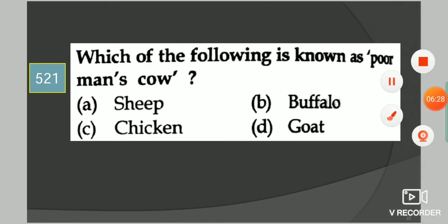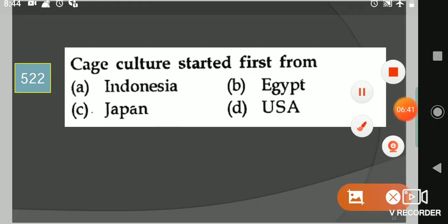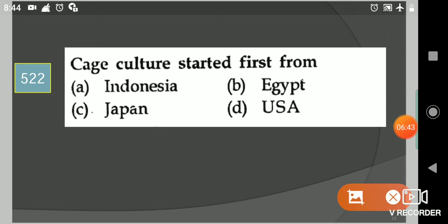Next question: Which of the following is known as poor man's cow? Your options are sheep, buffalo, chicken, goat. Your answer is option D, goat.